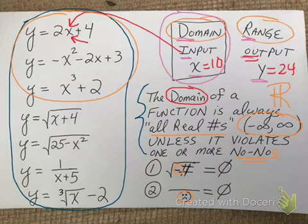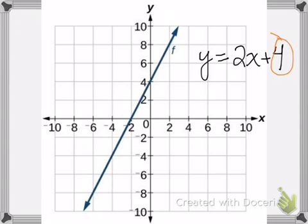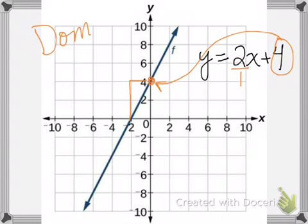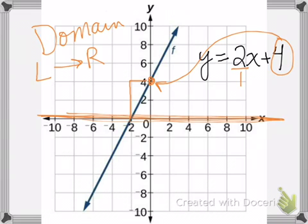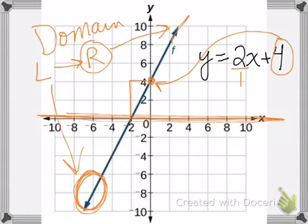I also want to show you the first three problems graphically to see why it's all real numbers from a graphical standpoint. The first one has a y-intercept of four and a slope of two over one. Domain is the x-values — the x-axis goes east and west, left and right. When you think about domain, think left and right. This graph goes forever to the left and forever to the right. Even though it's going down or up, that is a y-direction — as far as east and west, it goes forever both ways.